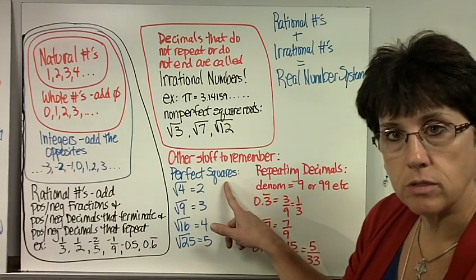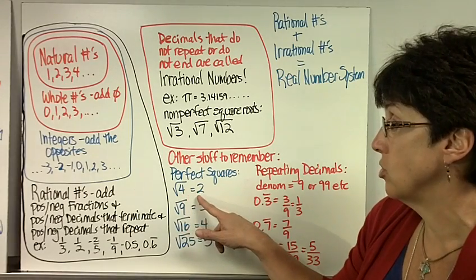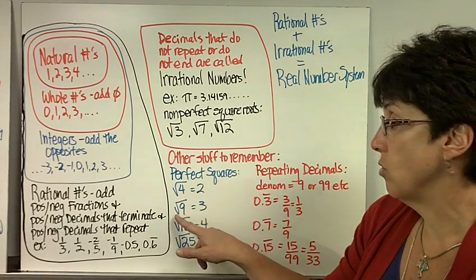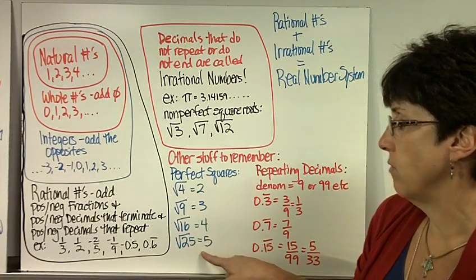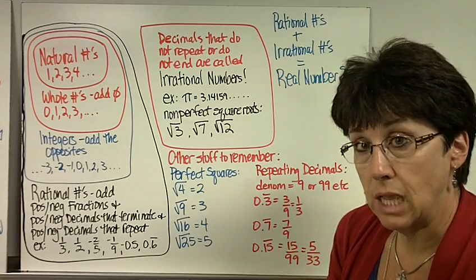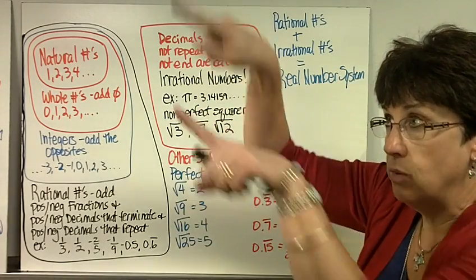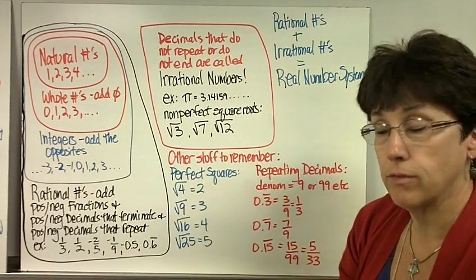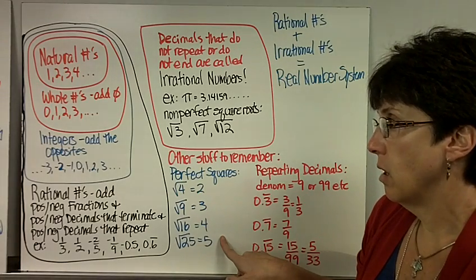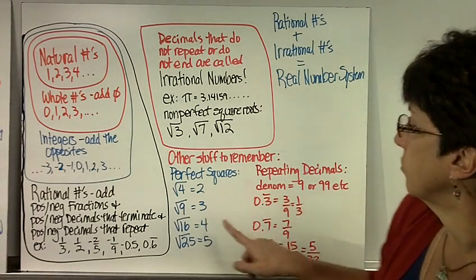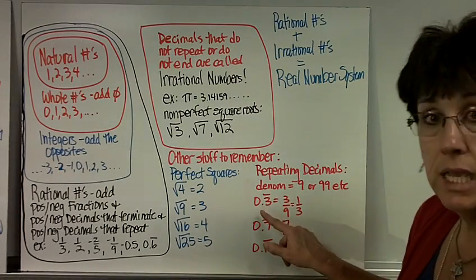Other stuff to remember: perfect squares. That's when the square root of something times itself. The square root of 4 is 2 because 2 times 2 is 4. The square root of 9 is 3 because 3 times 3 is 9. The square root of 16 is 4, and the square root of 25 is 5, etc. If you look at a multiplication table, the perfect squares go down the diagonal: 3 times 3, 4 times 4, 5 times 5. Remember, perfect squares end up being natural numbers or whole numbers. Also, repeating decimals have a denominator of 9 or 99, etc., not 10 like most decimals do.